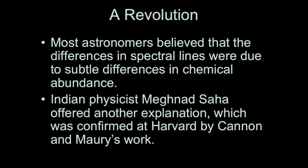At the time, Annie Jump Cannon and Antonia Mari did not know why the order of the stars appeared this way according to temperature. That came later. Before this, a lot of astronomers thought that the spectral lines were due to subtle differences in the chemical abundance of atoms in the atmospheres of stars.